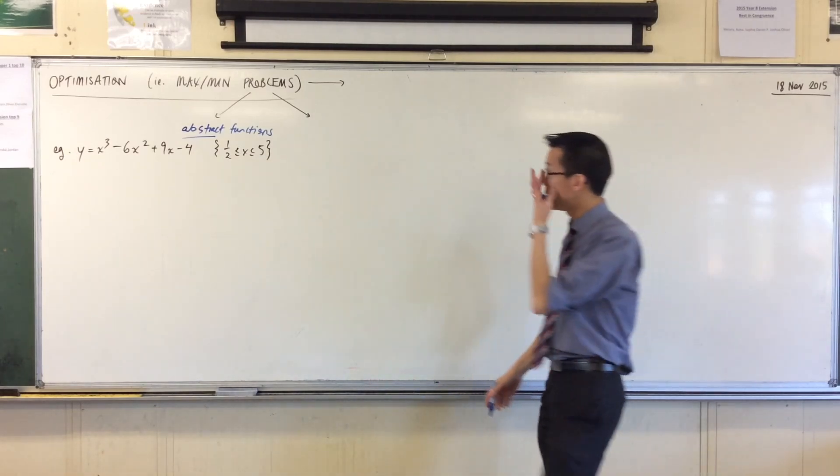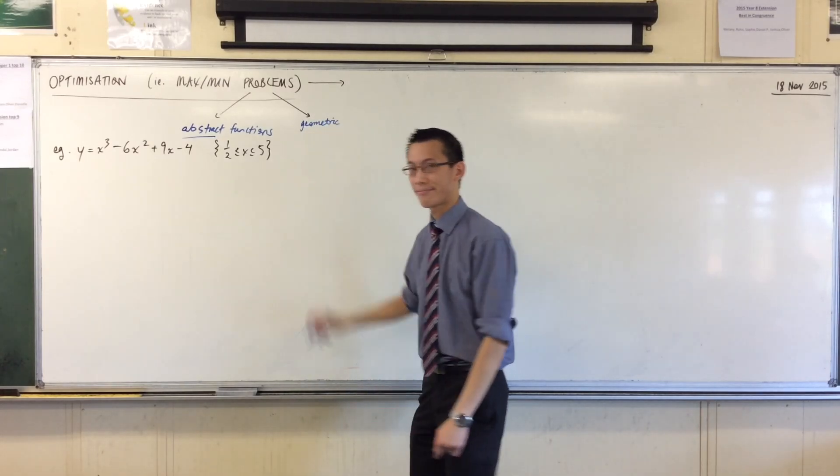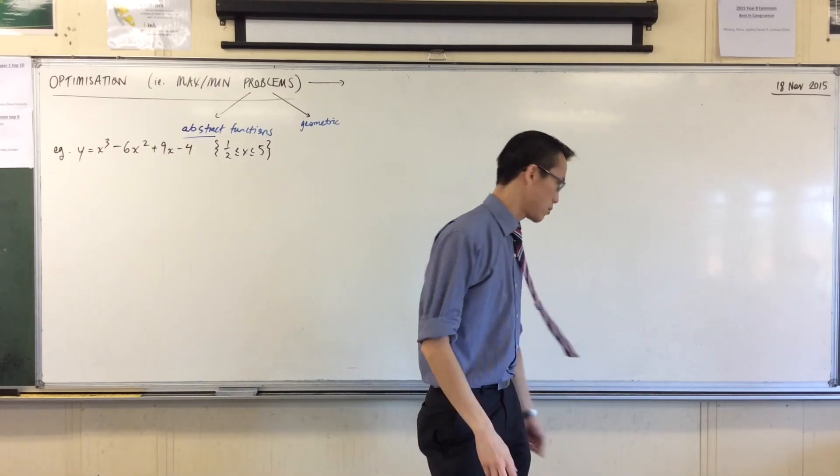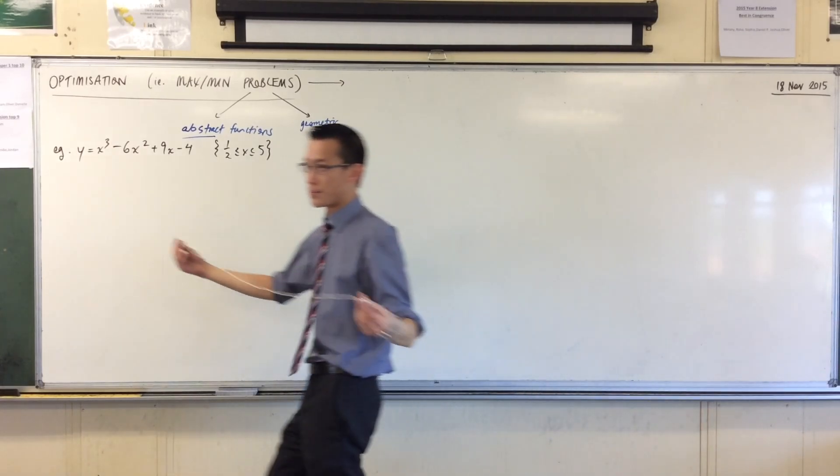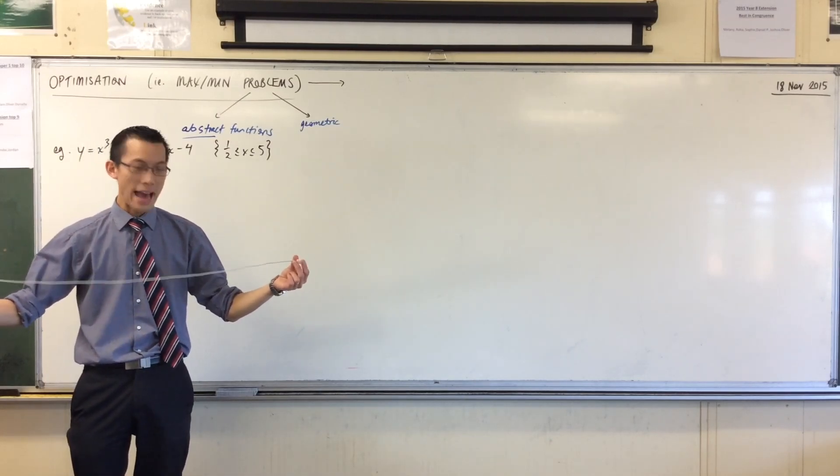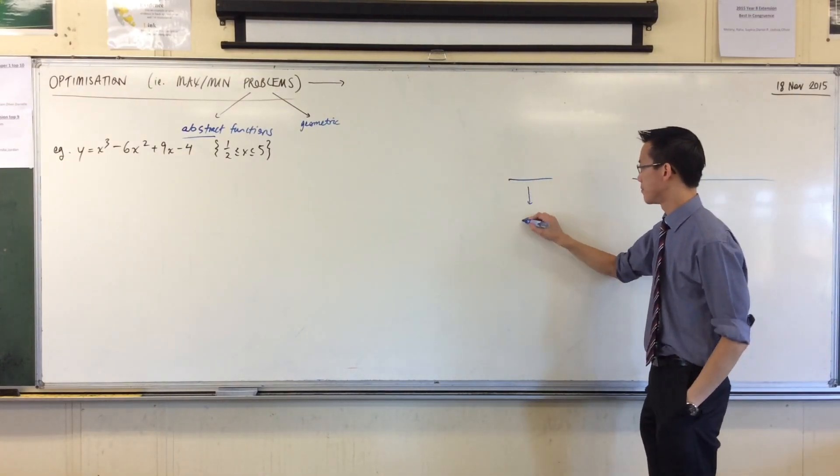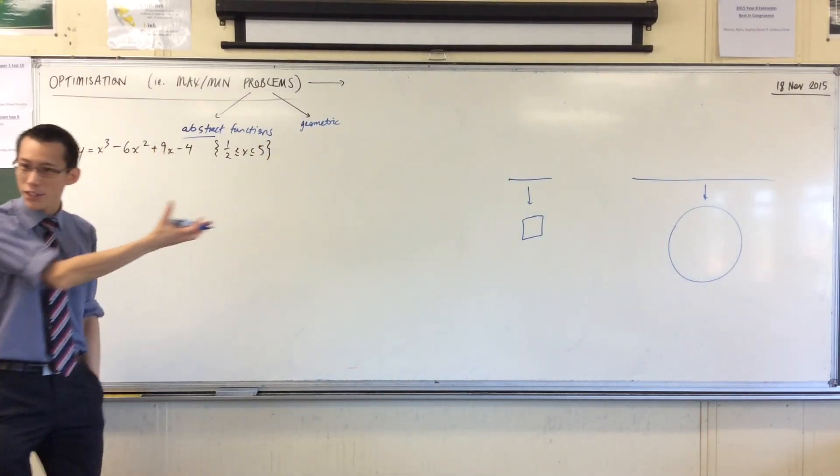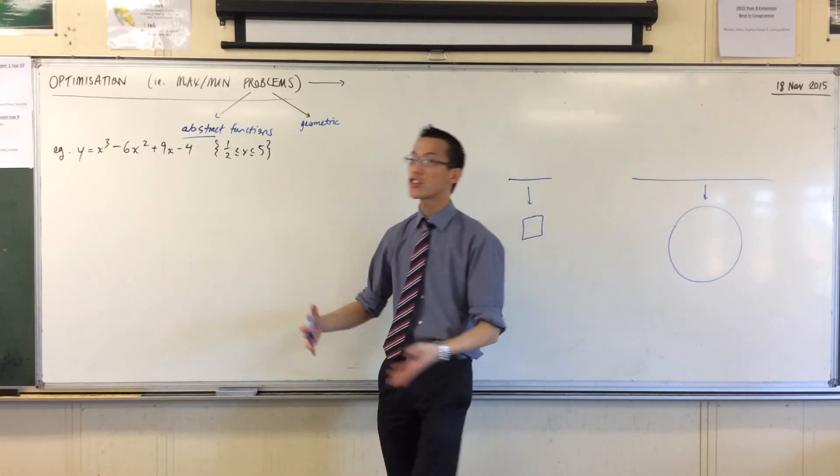The second kind of problem is geometric situations. An example would be, I have a one meter cable. I am going to cut this one meter cable into two portions, and out of one portion I am going to draw a square, and out of the other portion I'm going to make a circle. There's a certain length of cable. And my question might be, for instance, what's the maximum area I can get from both of my shapes?